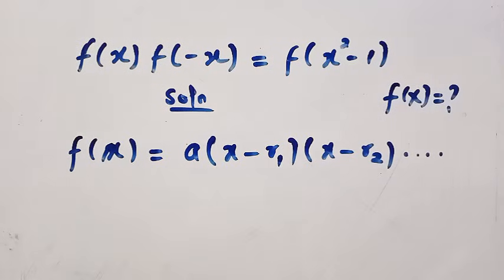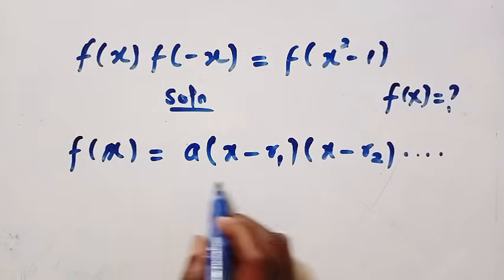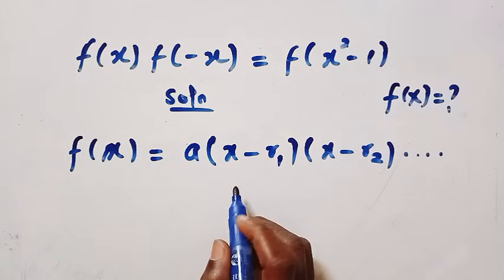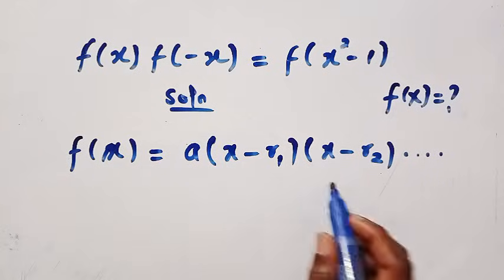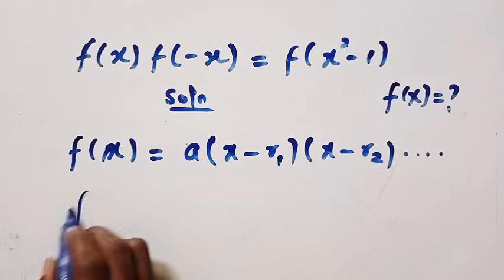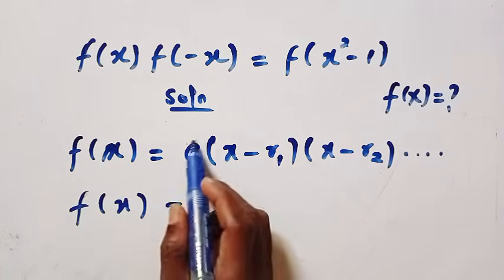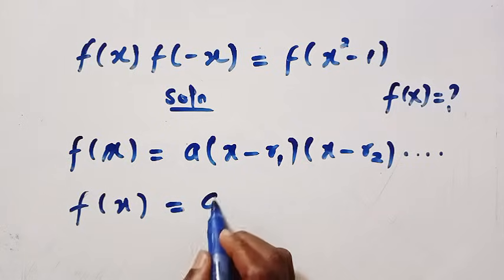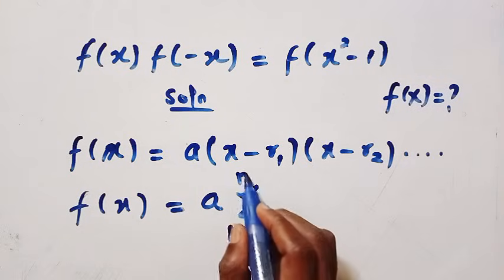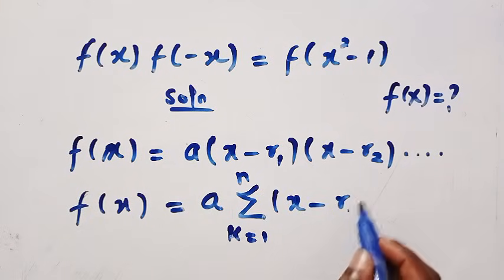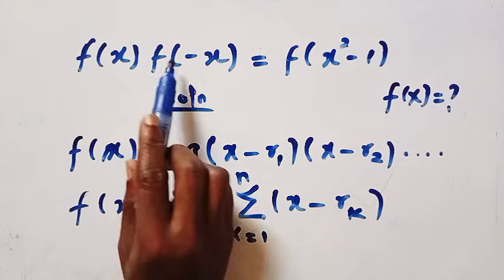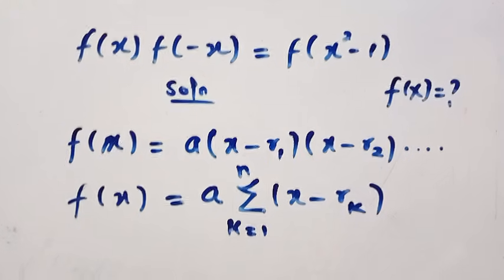We are not considering any complex numbers, and there are no irreducible quadratic factors — all the roots are real. Therefore, we can write f(x) equals a times the product from k = 1 to n of (x - rₖ), where a is a constant coefficient. This is our expression for f(x), and next we need to find f(-x).